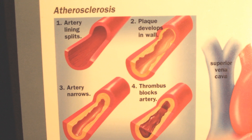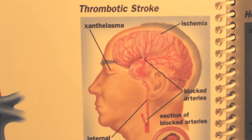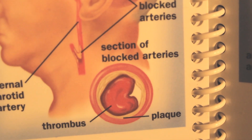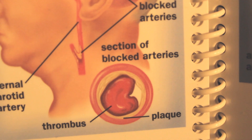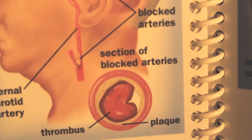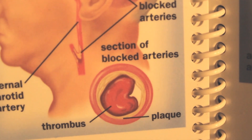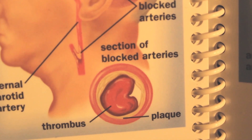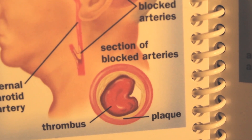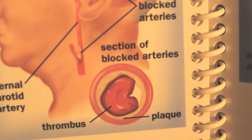When mucus hardens, it becomes plaque. When we observe a thrombotic stroke — thrombo meaning blood clot — we are looking at mucus as the cause of this condition. If you notice the blocked arteries, what is causing the blockage? Mucus. And when mucus is hardened, it turns into plaque. So a thrombotic stroke is caused by mucus hardening into plaque.